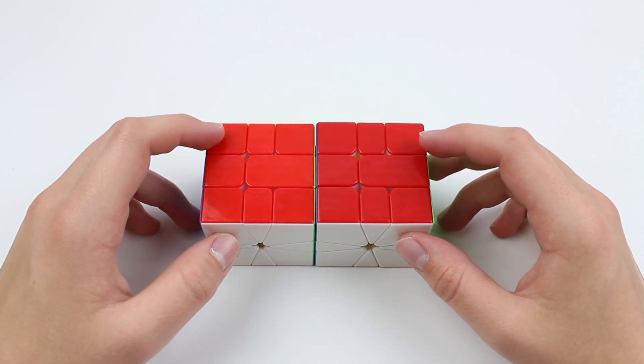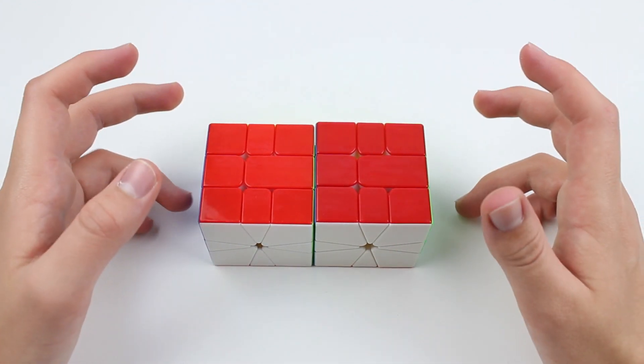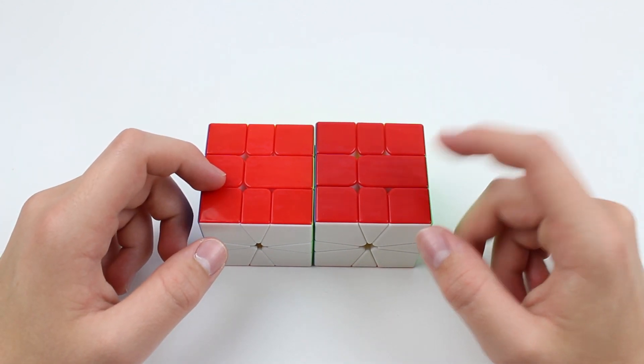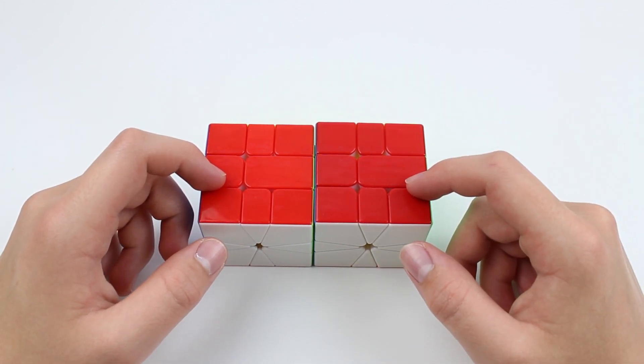Hey guys, this is Cuber. Welcome back to another video. Today we're going to be taking a look at two square ones, the X-Man Volt MS and the Yushin Little Magic Square One M.